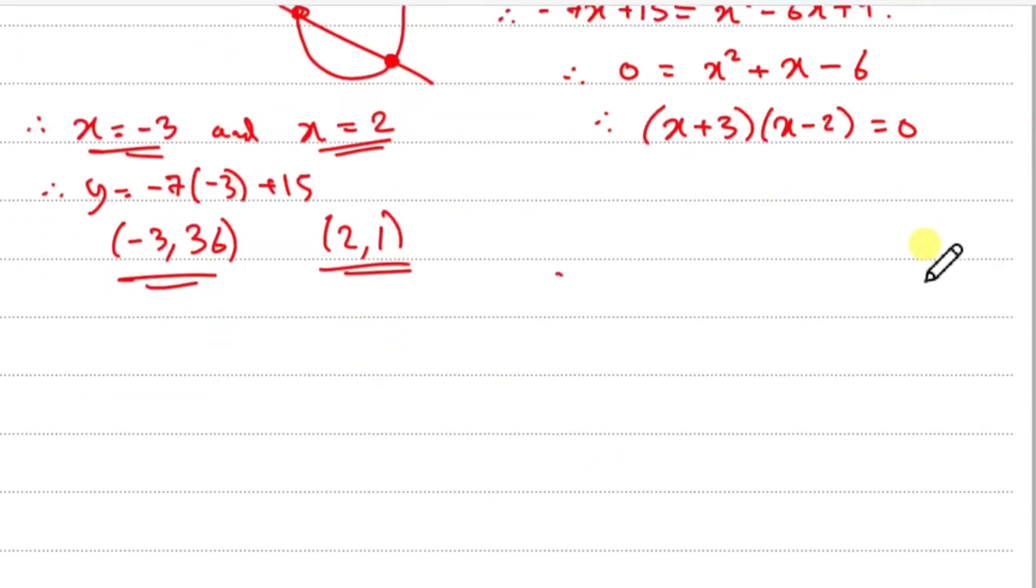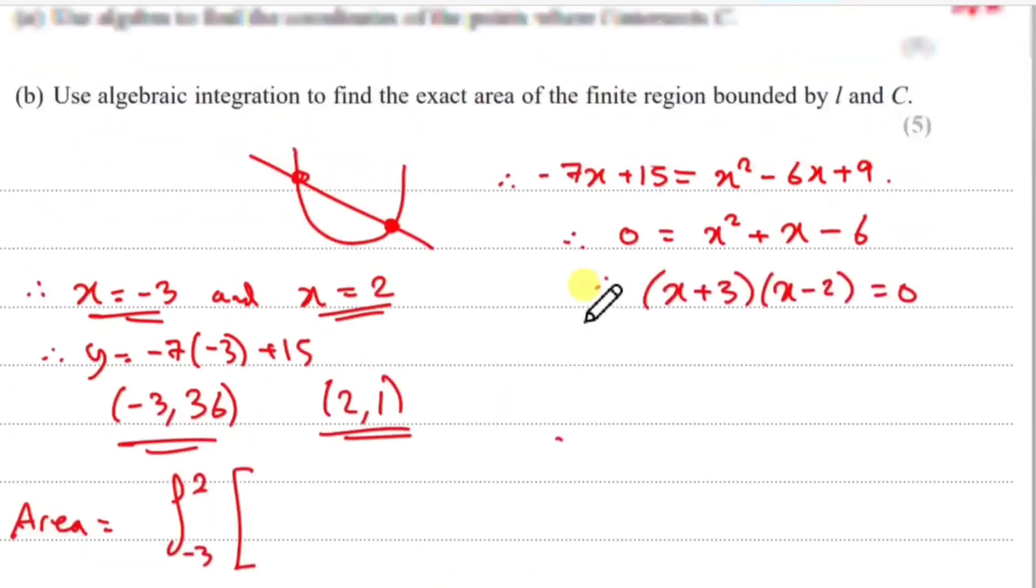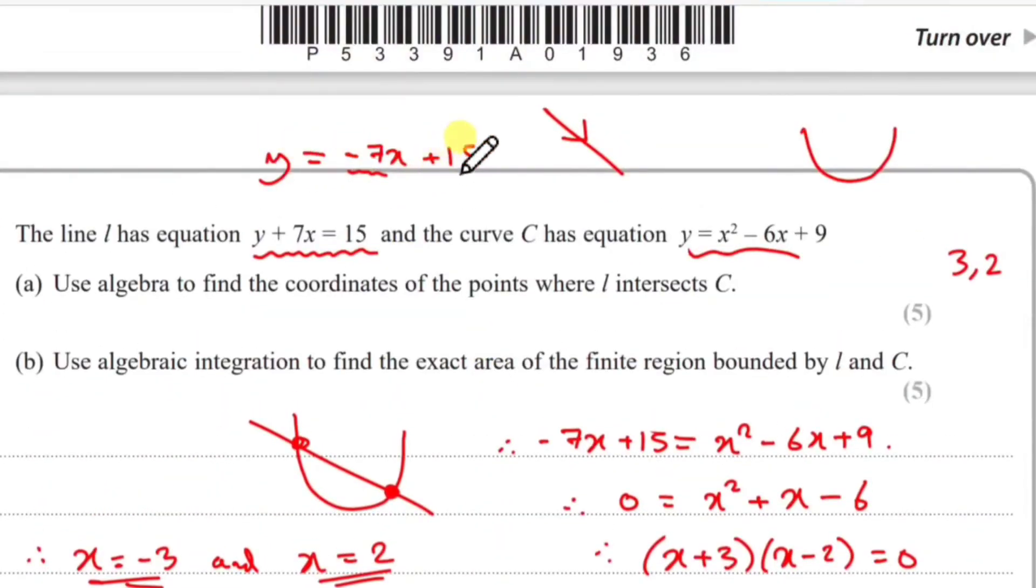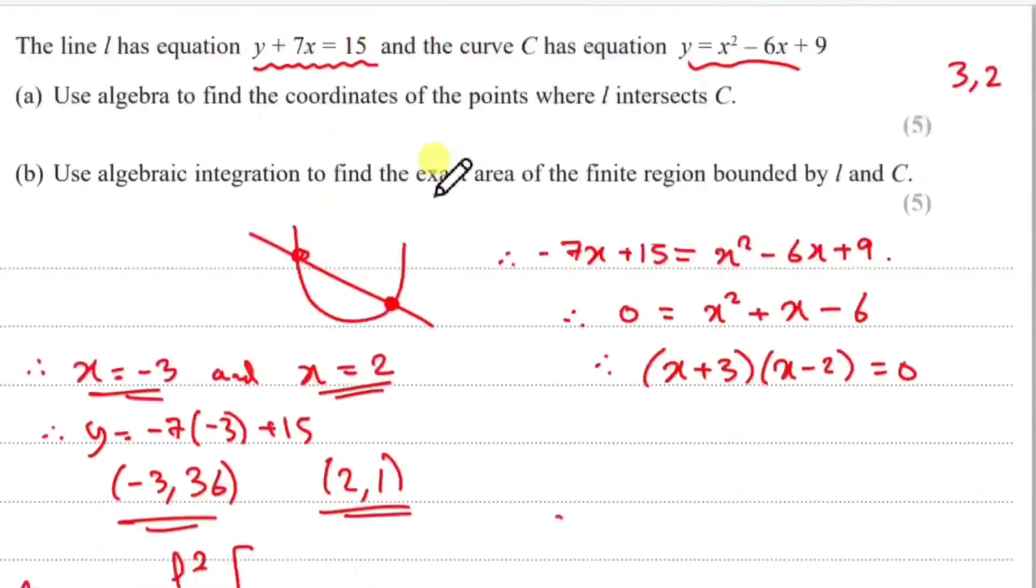It's actually quite easy. All you do is set up your integral. Area equals integral, and our limits are between our x coordinates, so between -3 and 2. We have the line equation which equals y, so -7x + 15.